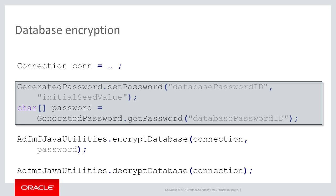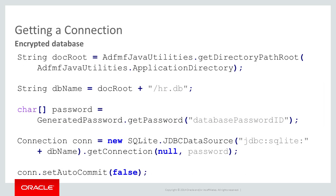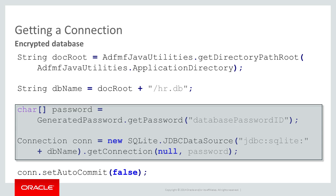This is accomplished through the GeneratedPassword class, which requires a distinct ID for each password it manages. In addition, the setPassword method will use a seed value to jumpstart the generation. To establish a connection to an encrypted database, simply pass the credentials to the getConnection method. You can retrieve the correct password using the GeneratedPassword class.